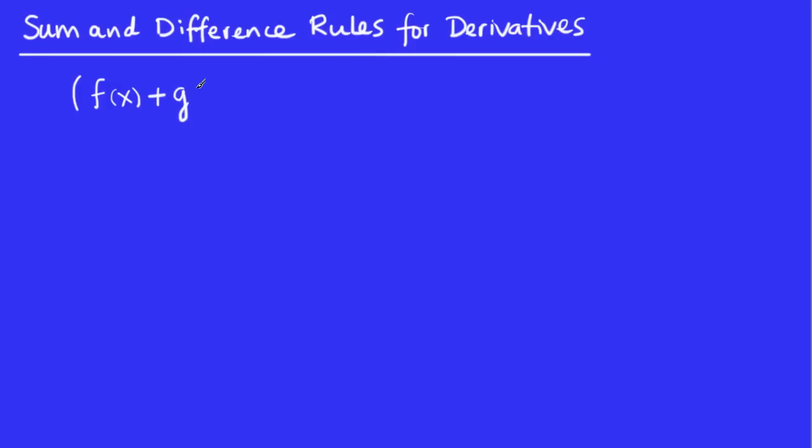Let's say we have the sum of two different functions and we want to take the derivative of that. How do you think we're going to do that? Well, your intuition might suggest that to do the derivative of this sum, all you should do is the derivative of the first plus the derivative of the second.